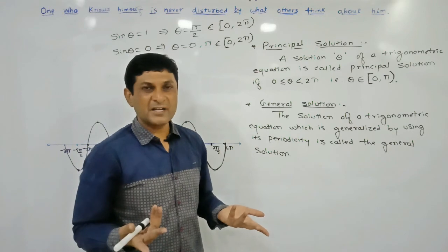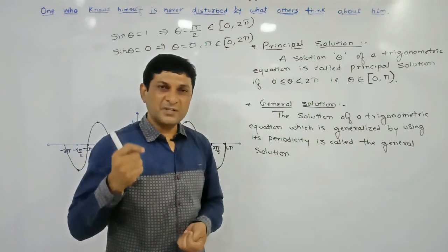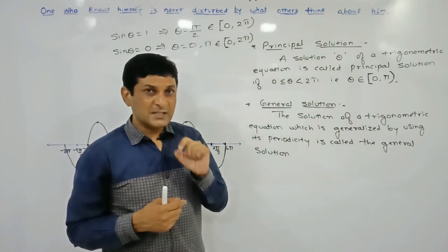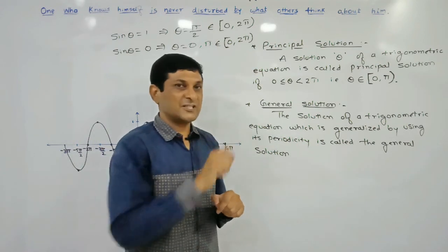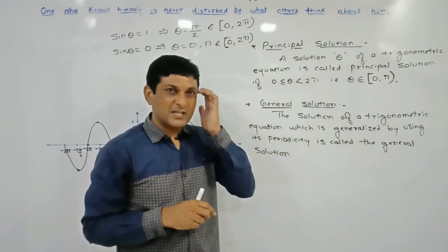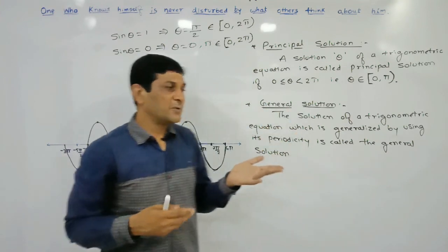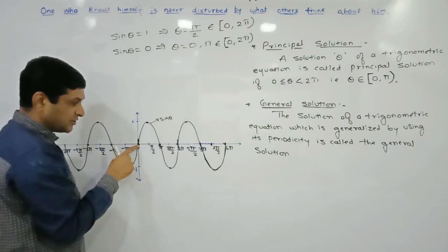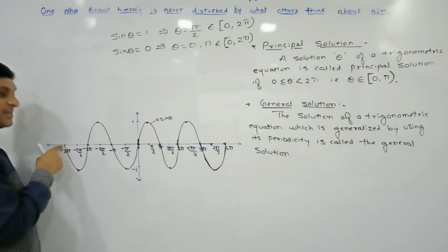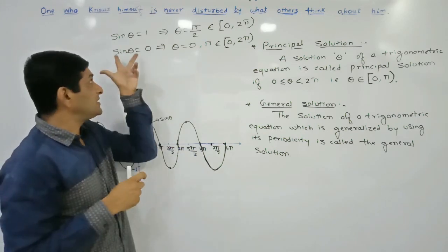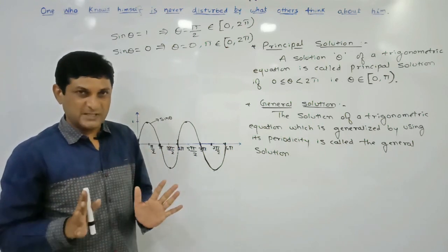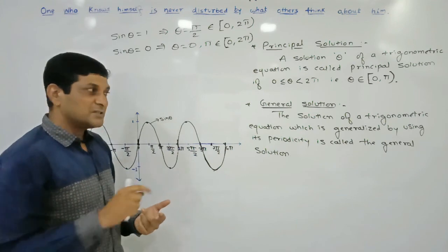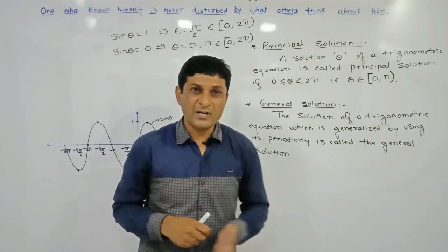General solution means considering every possible solution of the trigonometric equation. Every trigonometric equation has infinitely many solutions — for sine θ = 0, we get θ = 0, π, 2π, 3π, 4π, and on the negative side −π, −2π, −3π, −4π, and so on. The set of all these solutions is called the general solution, and it can be expressed using an algebraic expression.